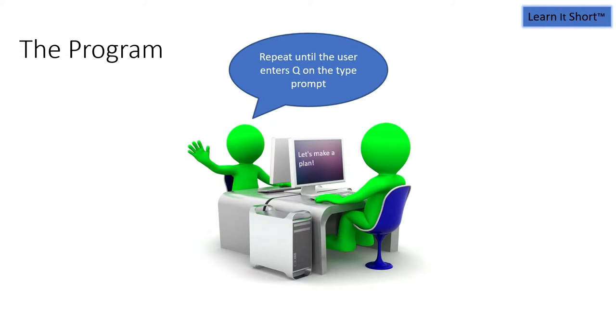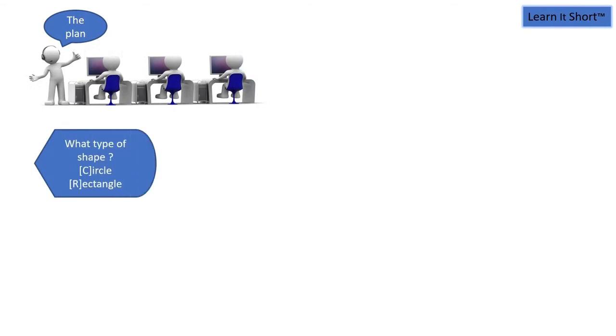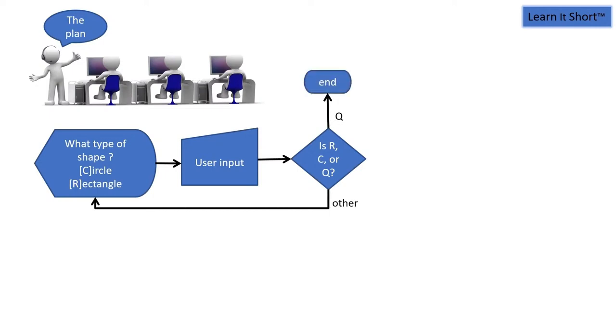So let's make a plan. I'm going to demonstrate this with a simple flowchart. First of all, what type of shape? So we'll prompt the user, circle or rectangle, C or R, and we'll wait for the user to make that input. Once they make their input, we'll decide, is it one of the three valid characters, quit, rectangle or circle? If it's quit, then we're going to end the program, terminate. If it's something other than R, C or Q, we'll just come back and prompt them again and wait for them to do this until they enter the correct response.